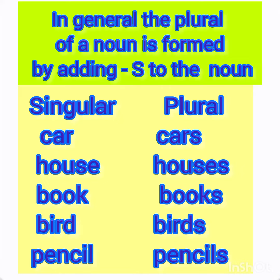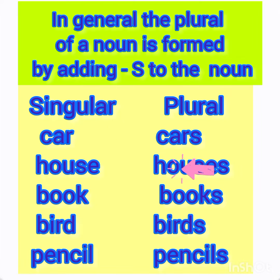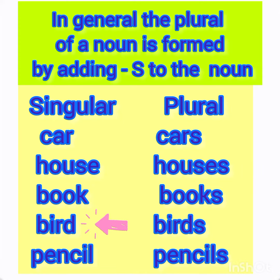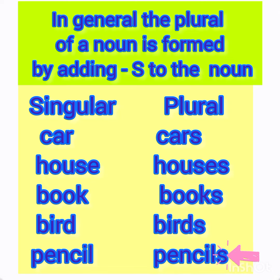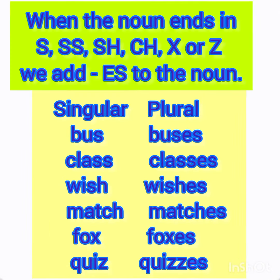In general, the plural of a noun is formed by adding s to the noun. For example: singular is car, plural is cars; house, houses; book, books; bird, birds; pencil, pencils.